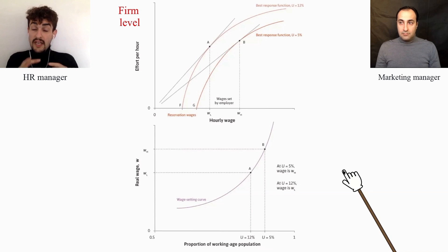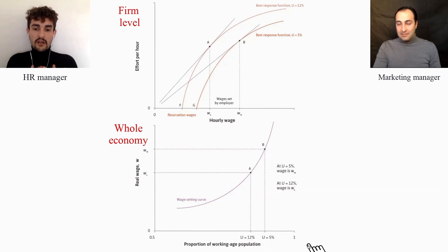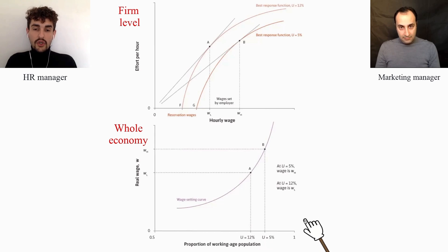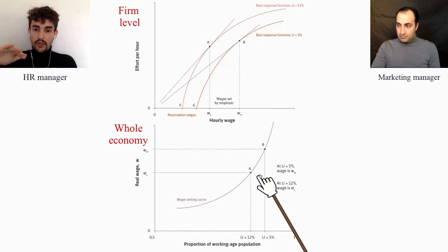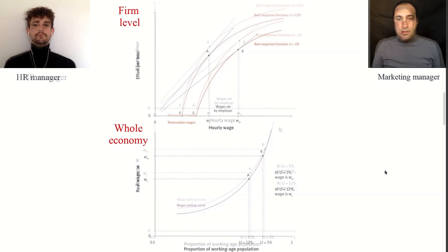If you imagine this process repeated across the whole economy and aggregate all these decisions, you obtain the wage-setting curve shown in the lower graph. That curve shows the real wage that workers will be paid at different levels of unemployment — the wage that ensures they turn up to work and do not shirk. As the level of unemployment decreases, the real wage consistent with workers putting in adequate effort has to increase. That is the meaning of these two graphs. That concludes step one: the HR manager setting the nominal wage.